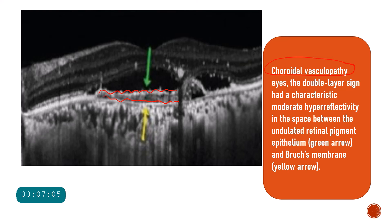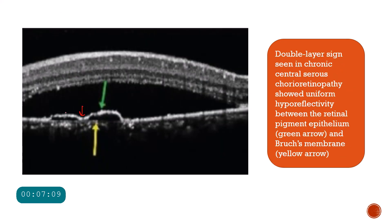Here you can also see the notch sign with two PEDs, and again you can see the RPE and Bruch's membrane forming the double layer sign. However, in this image there is a large amount of subretinal fluid causing the neurosensory retina to detach from the RPE — this is actually a chronic central serous chorioretinopathy case, which is also a part of the pachychoroid spectrum.